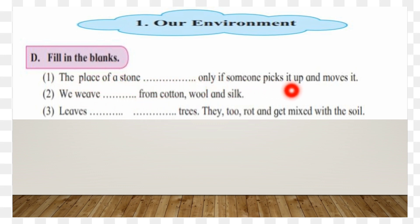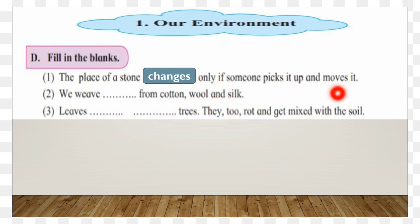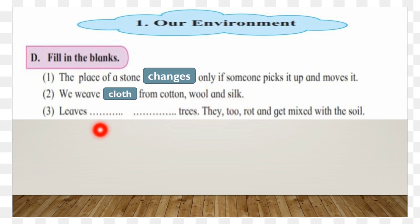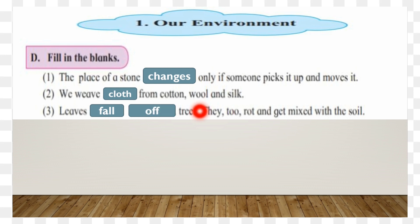Fill in the blanks. First: the place of a stone changes only if someone picks it up and moves it, because stone is a non-living thing. Second: we make clothes from cotton, wool, and silk. Third: leaves fall off trees, they rot and get mixed with the soil.